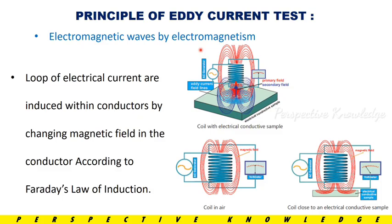With the electromagnetic waves, we carry out this test. When the magnetic field is adjusted, we check the material. We produce the EMF — electromagnetic force. That EMF is the Eddy Current. With the Eddy Current, we measure the output in the graph.